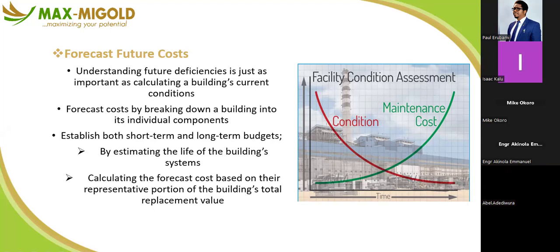By understanding future deficiencies and calculating the building's current condition for forecasting costs, you break the building into individual components. For a block of six three-bedroom flats, you assess each flat individually — ground floor, first floor, second floor — checking toilet, bedroom, wardrobe, and every item separately. You assign costs: bedroom 10,000; toilet 5,000; kitchen 1 million for marble top, floor tiling, and suspended ceiling replacement; living room 10 million for new floor, fresh POP, chandeliers, floor tiles, and electrical fittings.